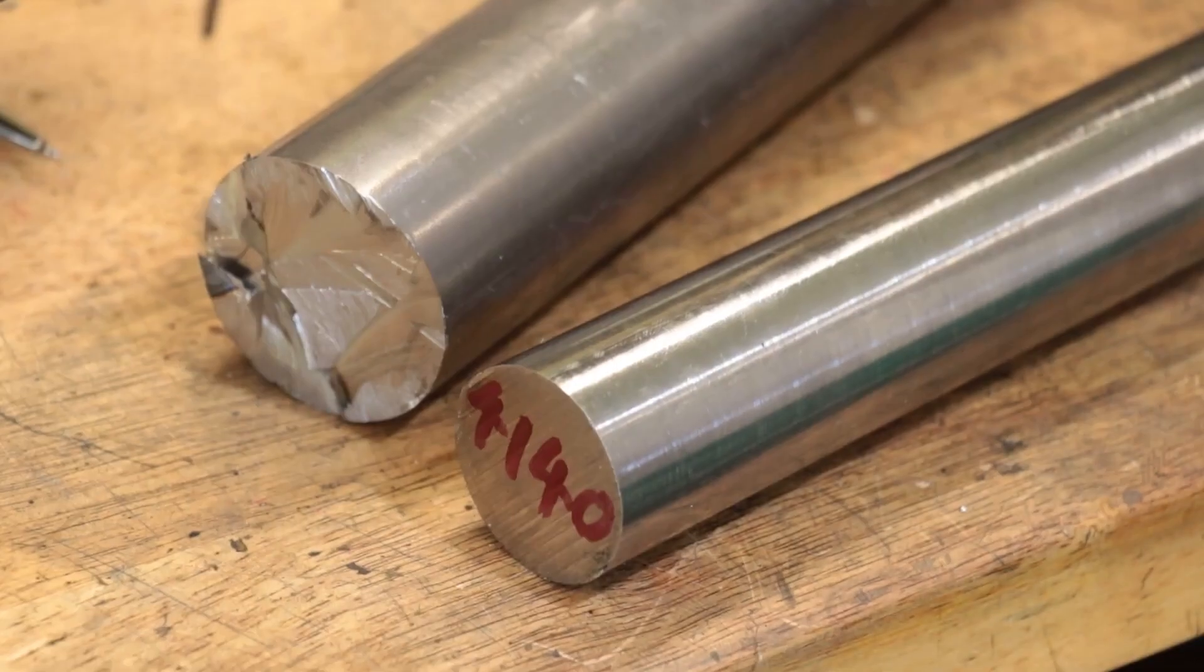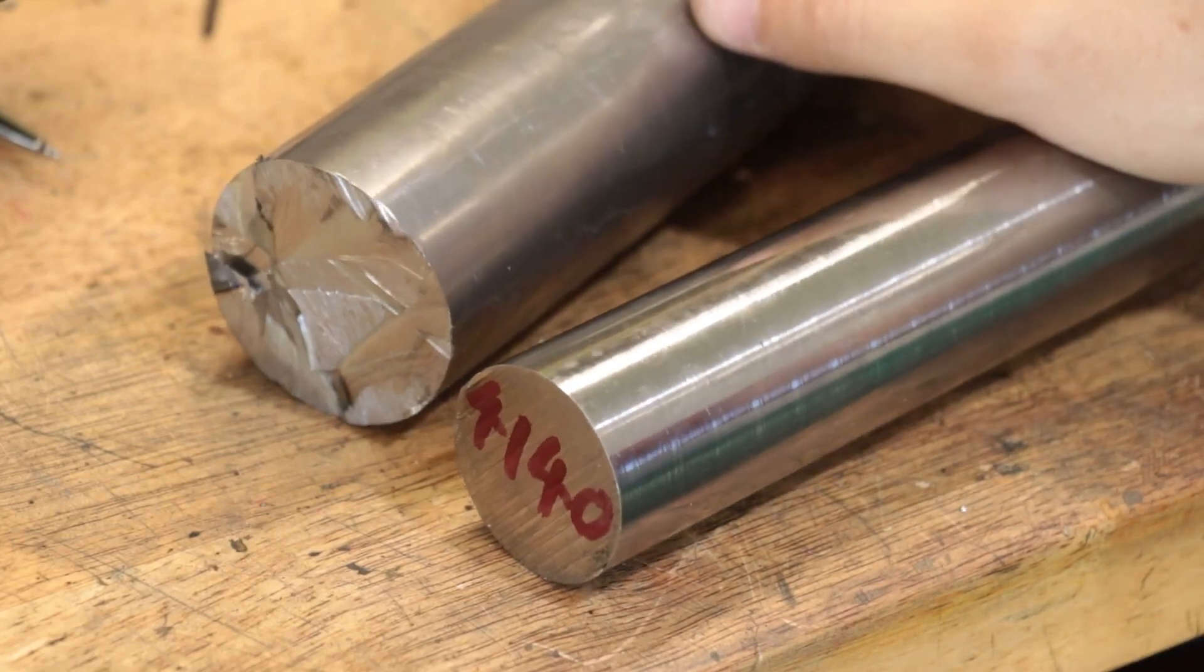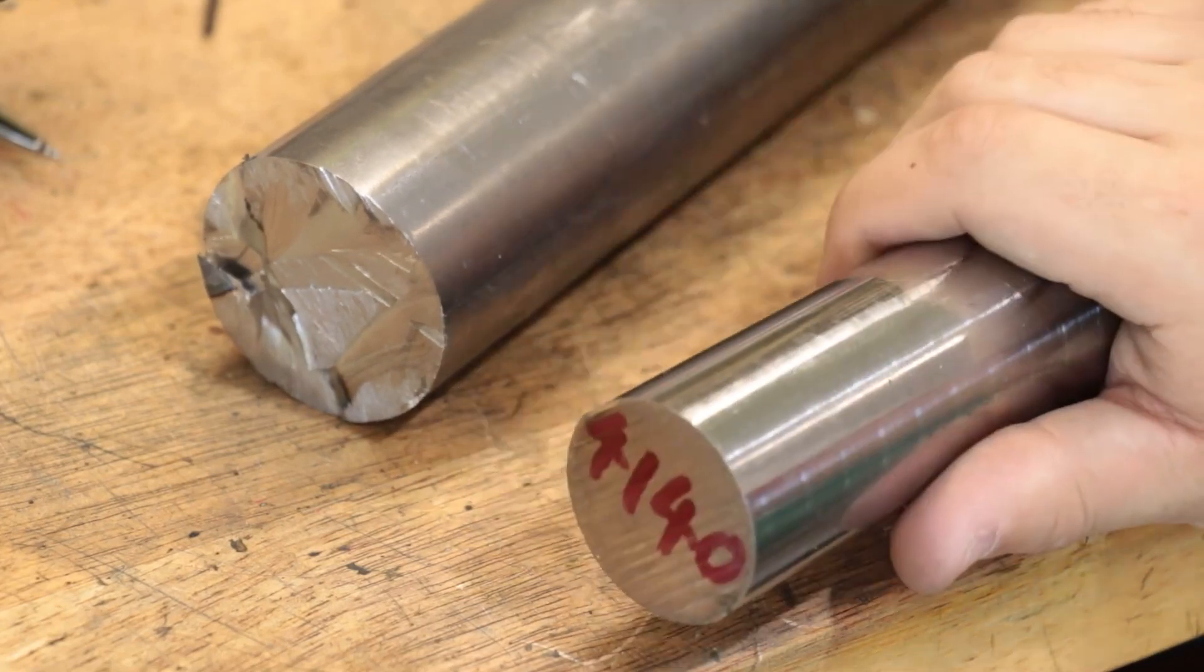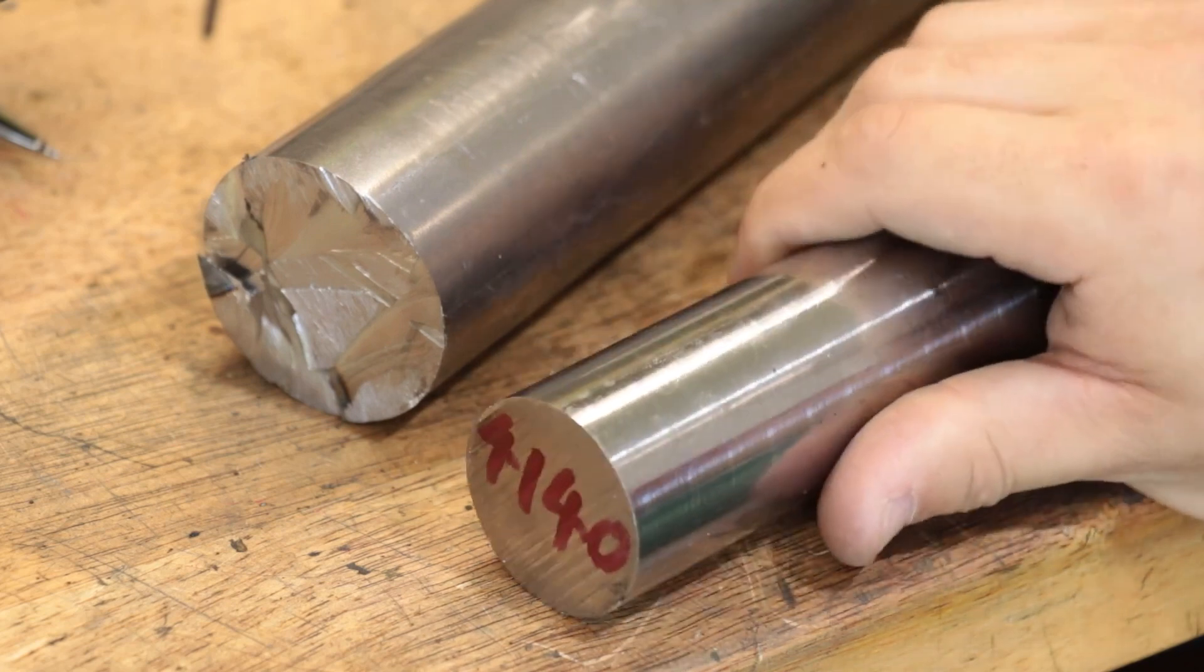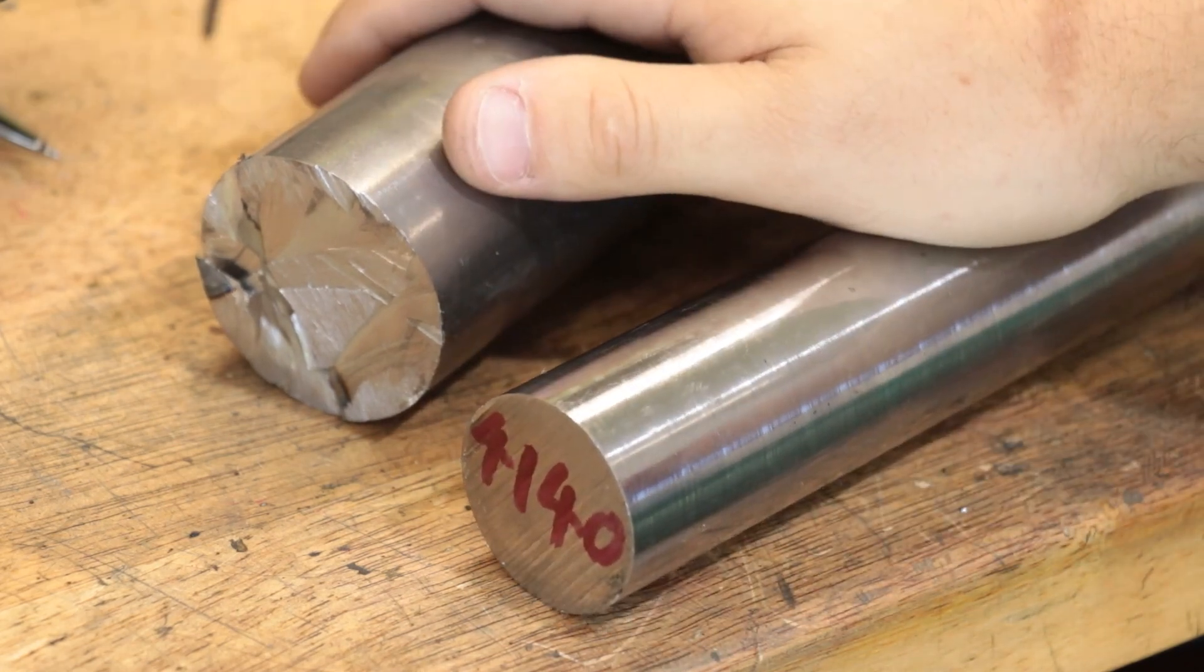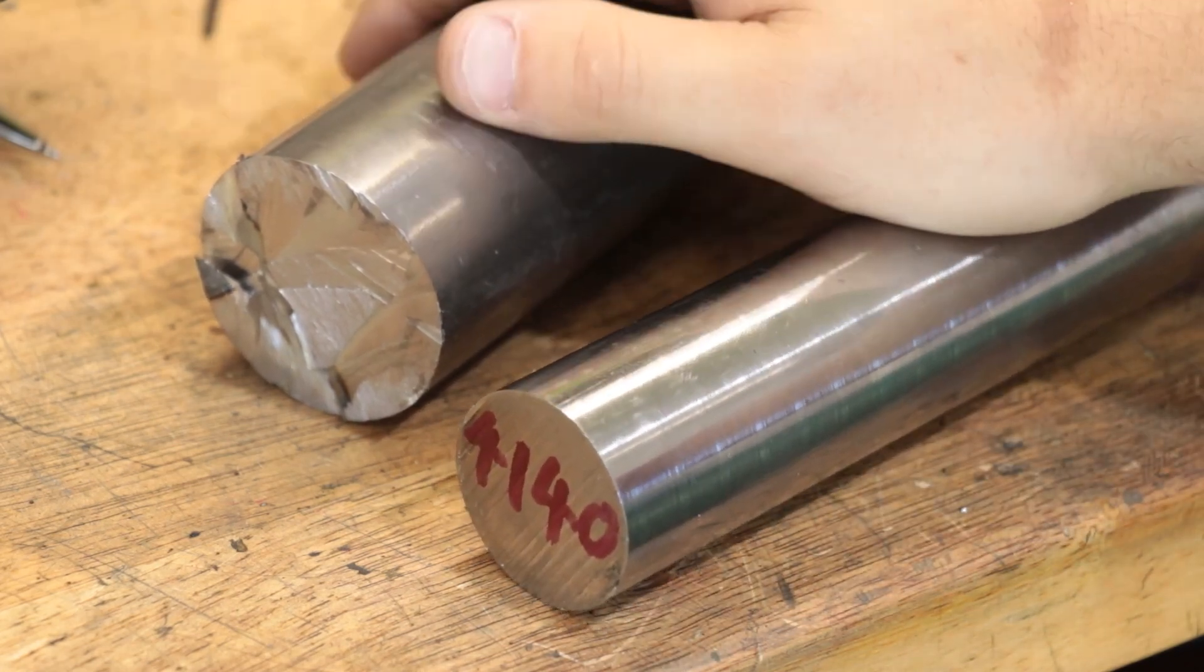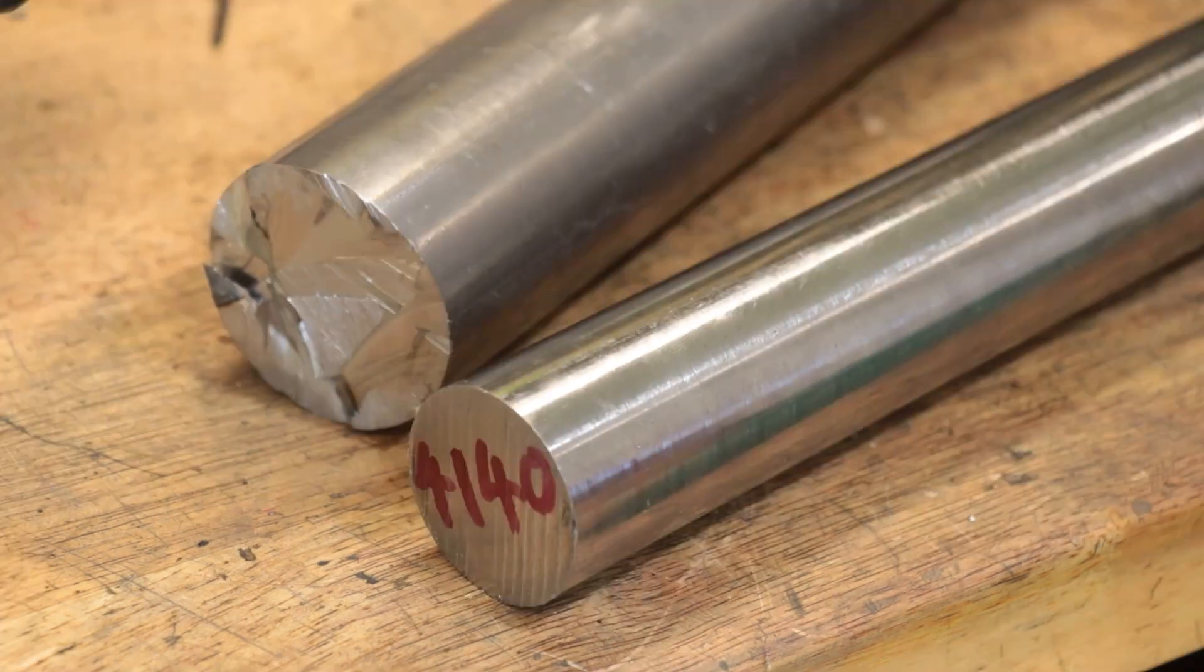Now I do have a choice in what to make it from. I have a piece of 4140 chromoly and a piece of cold drawn carbon steel. In terms of adding mass to the fly cutter, the cold drawn steel is the better pick.